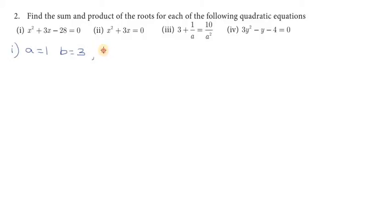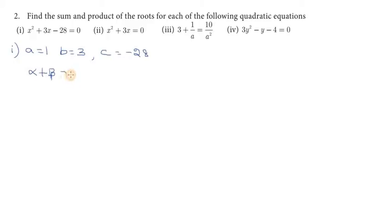So, b value is 3 and c value is minus 28. Sum is equal to minus b by a. So, minus 28 — this is the standard form. If you want to find the sum, then alpha plus beta is the sum. Sum is equal to minus b by a.